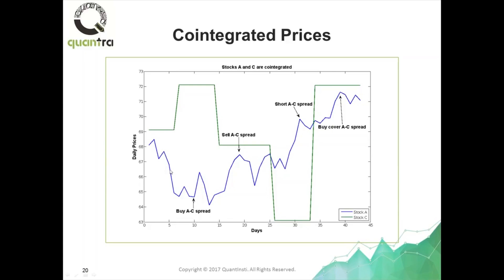Here is an example of two cointegrated stocks that are not correlated: A and C. Stock A is again the blue line, and stock C is the green line. You can see that when stock A goes down, stock C may go up. When stock C goes down, stock A may go up. So they are not correlated — maybe anti-correlated. But sometimes when stock C doesn't move, stock A still goes up and down. Sometimes they go in the same direction, so they are not fully anti-correlated either. Overall, you can see that they don't have any significant correlation of returns — they sometimes go in the same direction, sometimes in the opposite direction, sometimes one doesn't move and the other moves.